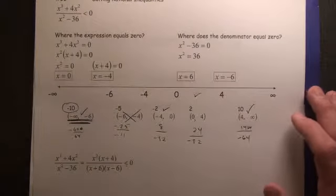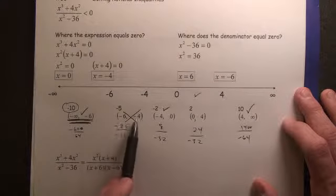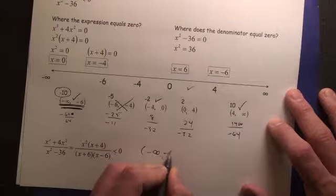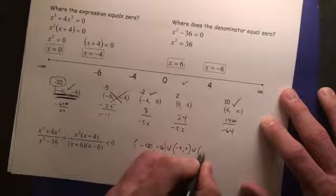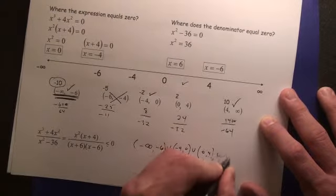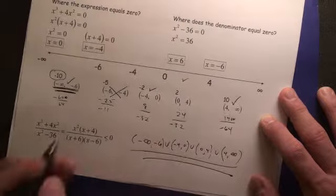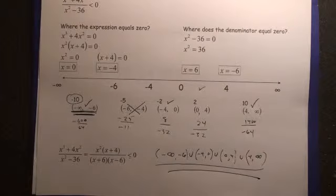So we have all of these work except for the interval between -6 and -4. So therefore, the answer is negative infinity to -6 union -4 to 0 union 0 to 4 union 4 to infinity. So everything except for the -6 to -4 interval. All right, good times.